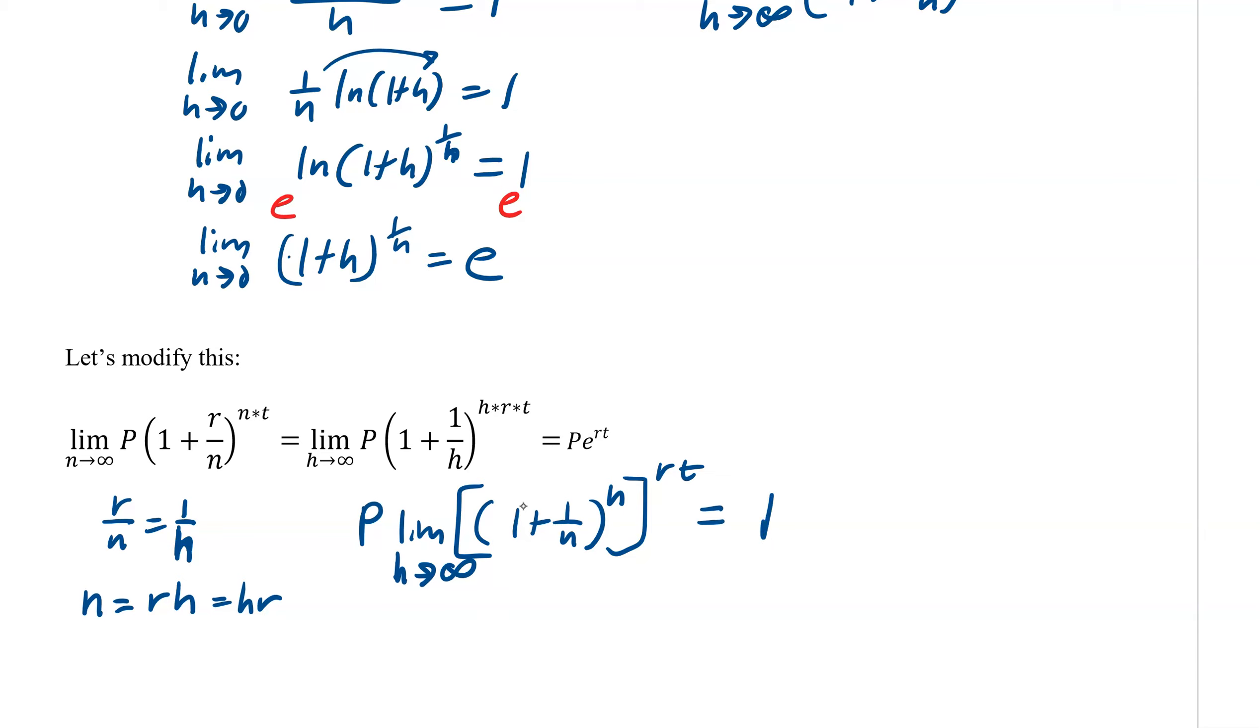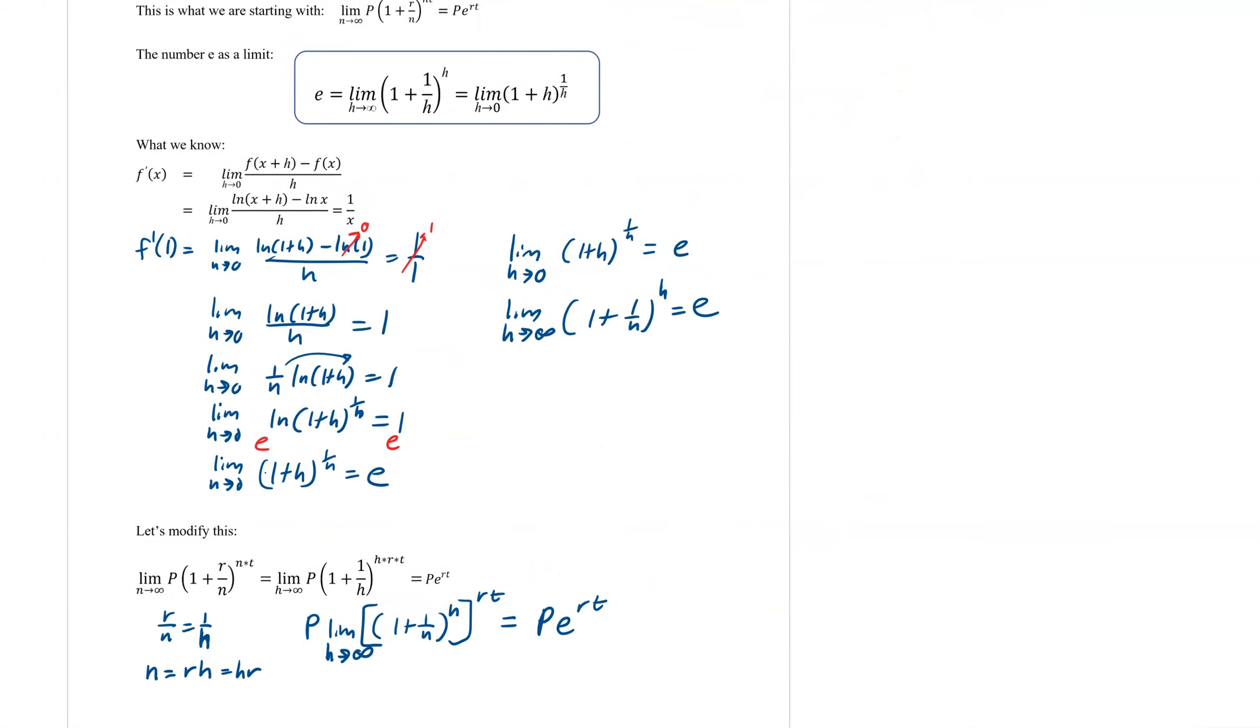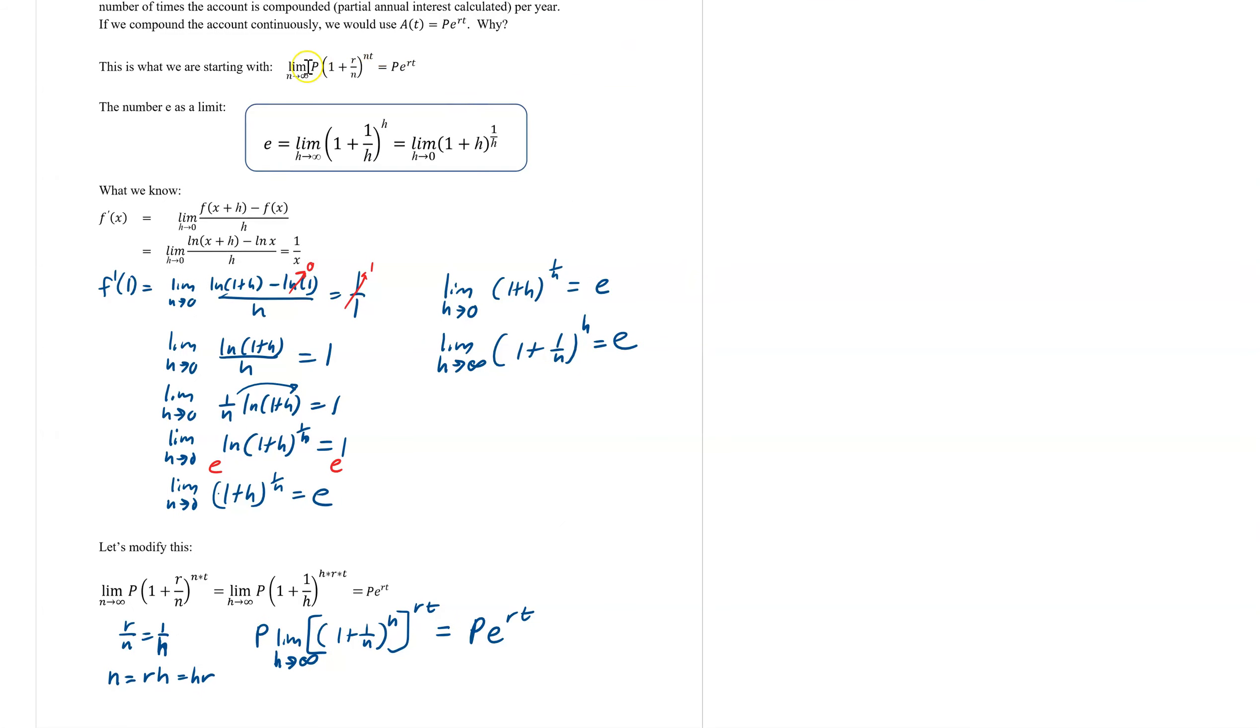So this is P. And then this right here is e to the rt. So what we're doing here is basically using the e definition. So the limit as n approaches infinity is basically making this, well part of it anyways, the r over n. That's the rate divided by the number of compoundings. Help us become e. That's it. So you can see the 1 plus r over n to the n becomes e to the r.